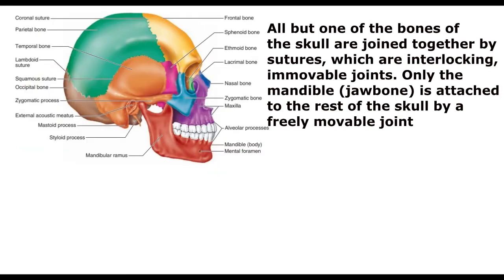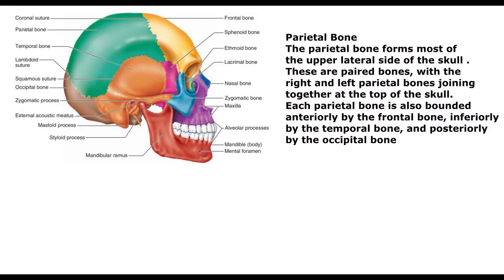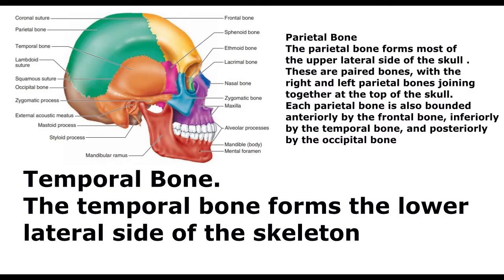Parietal bone. The parietal bone forms most of the upper lateral side of the skull. These are paired bones, with the right and left parietal bones joining together at the top of the skull. Each parietal bone is also bounded anteriorly by the frontal bone, inferiorly by the temporal bone, and posteriorly by the occipital bone. Temporal bone. The temporal bone forms the lower lateral side of the skull.